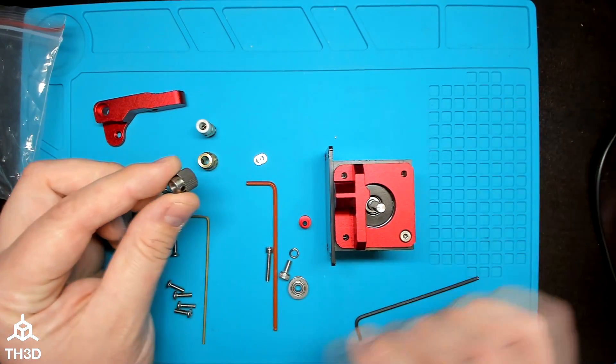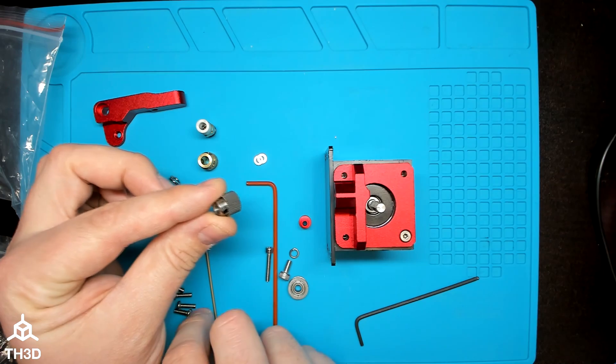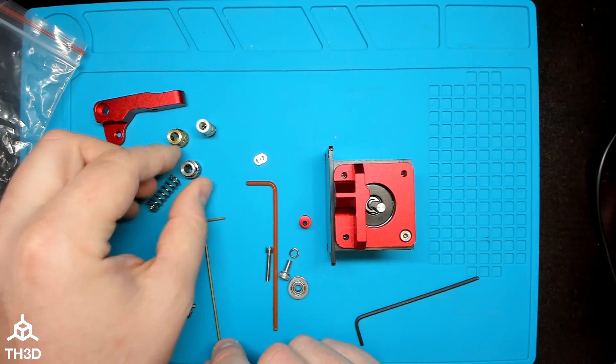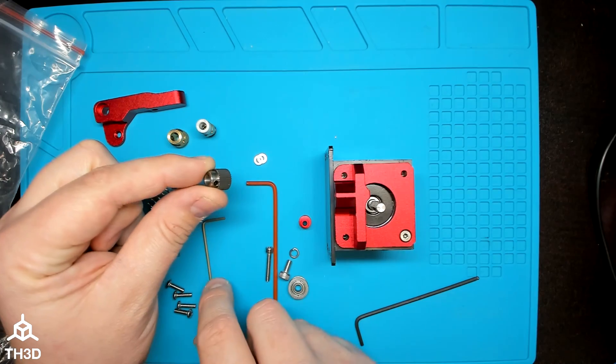The next step is to put the feeder gear on. I recommend you use the steel one. We include the brass one just as an extra because some people prefer it, but in my opinion, the steel is the best because it's going to last longest.